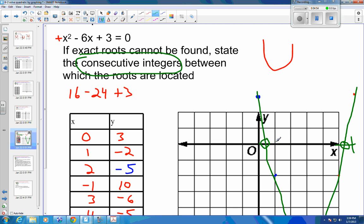So 0 is an integer, and 1 is an integer, and the root is between them, so between 0 and 1. And then this is 2, 3, 4, 5, between 5 and 6. And this is how you would write your answer if the given question was in this form. So state the consecutive integers between which the roots are located, between 0 and 1, and between 5 and 6.